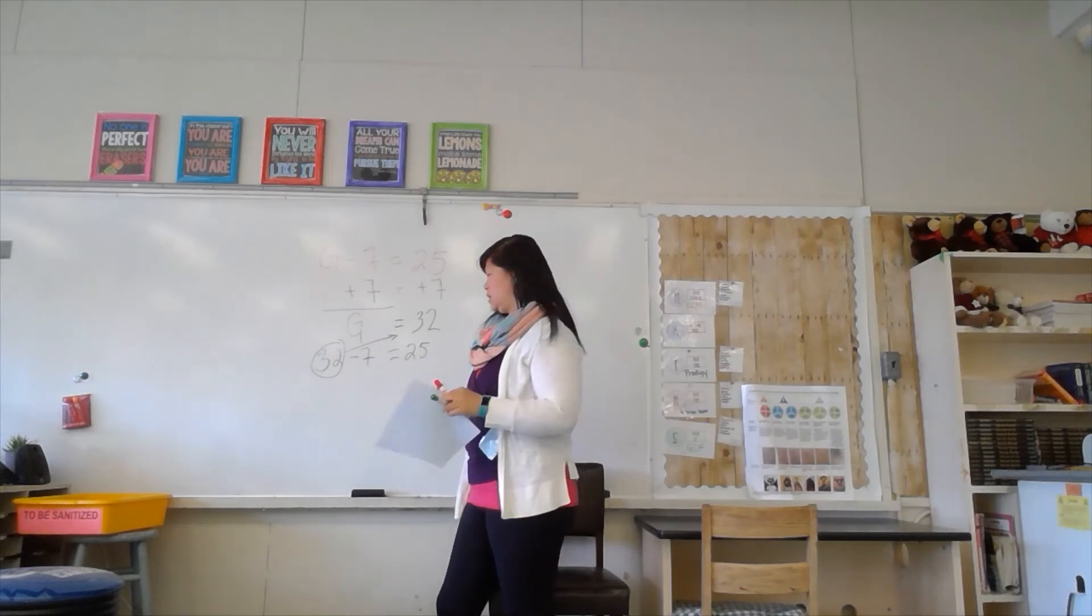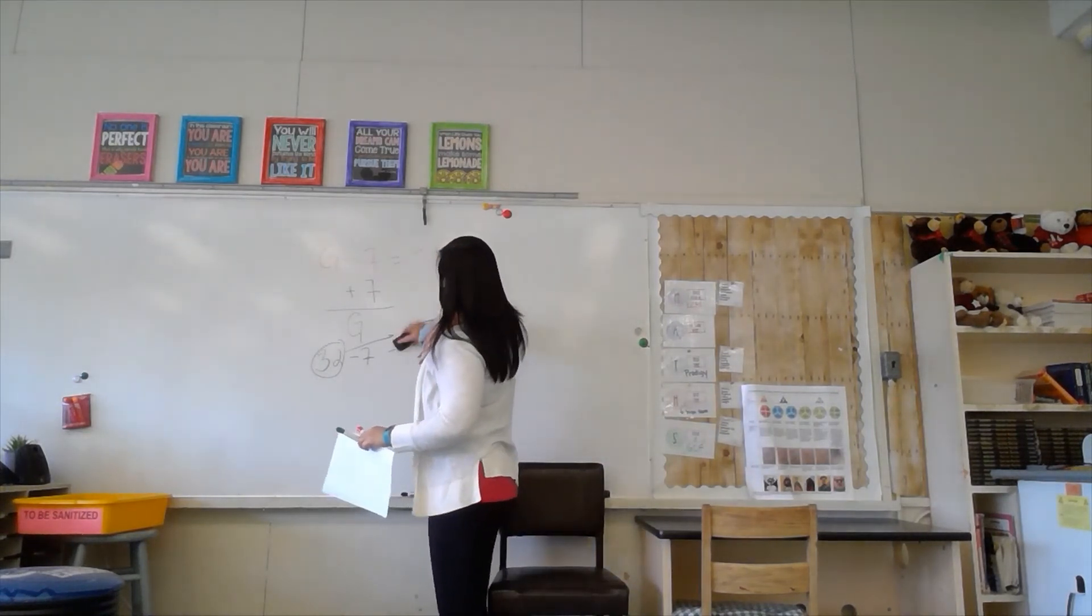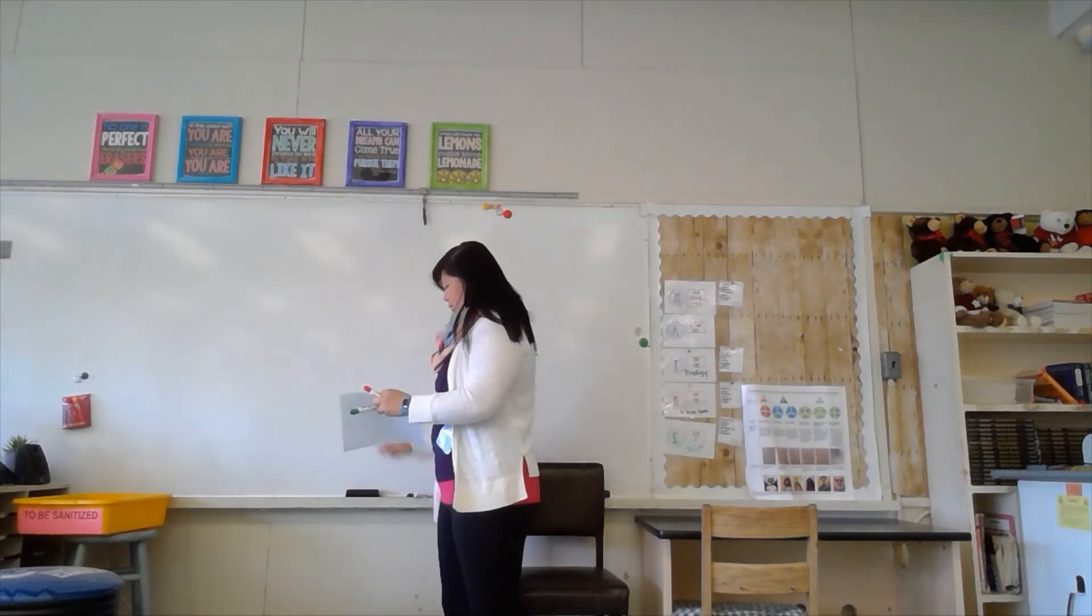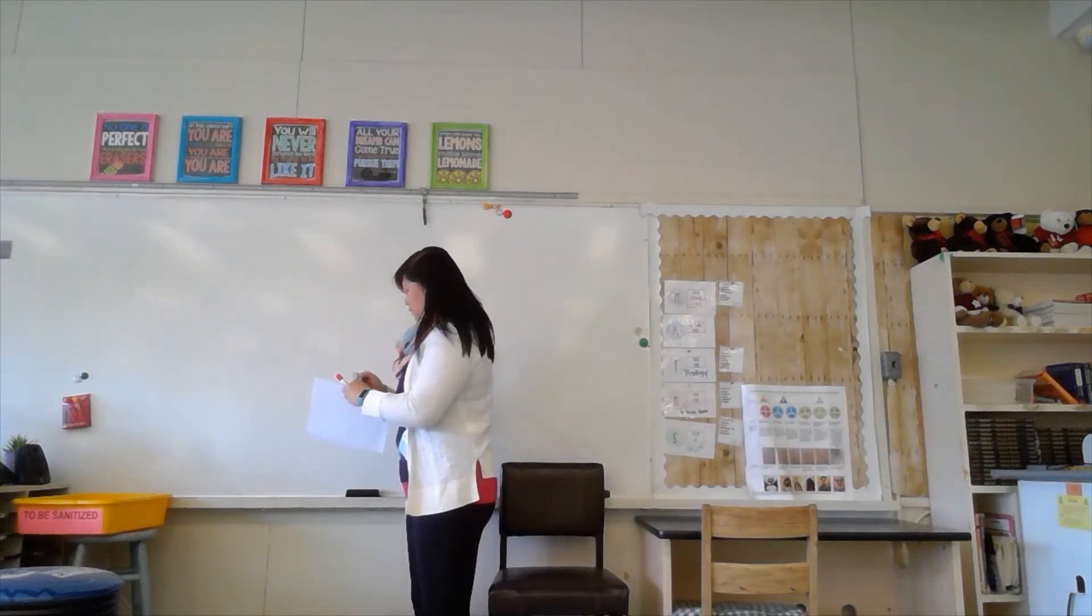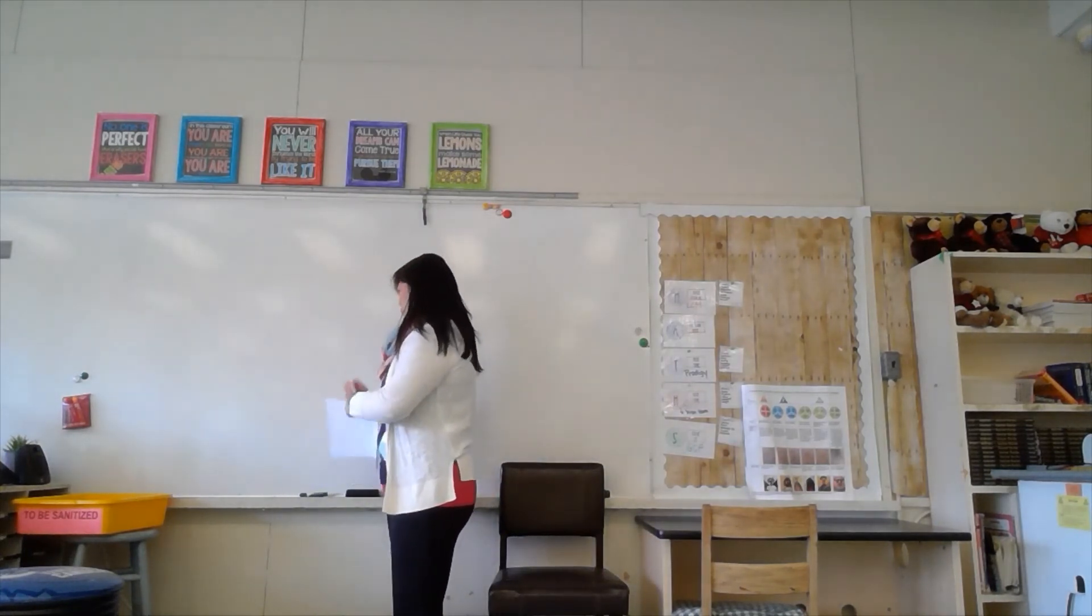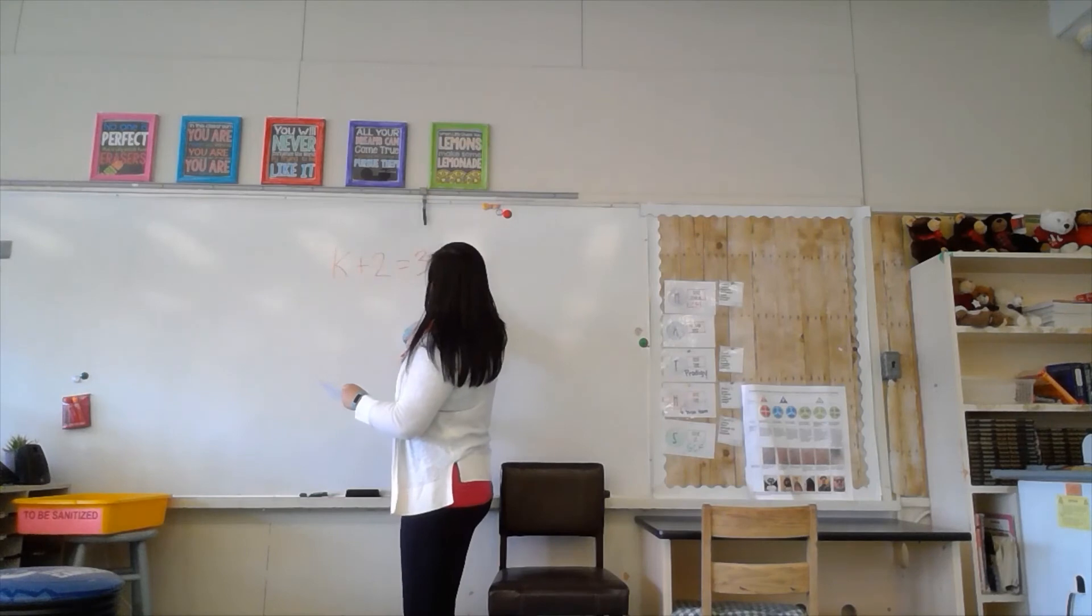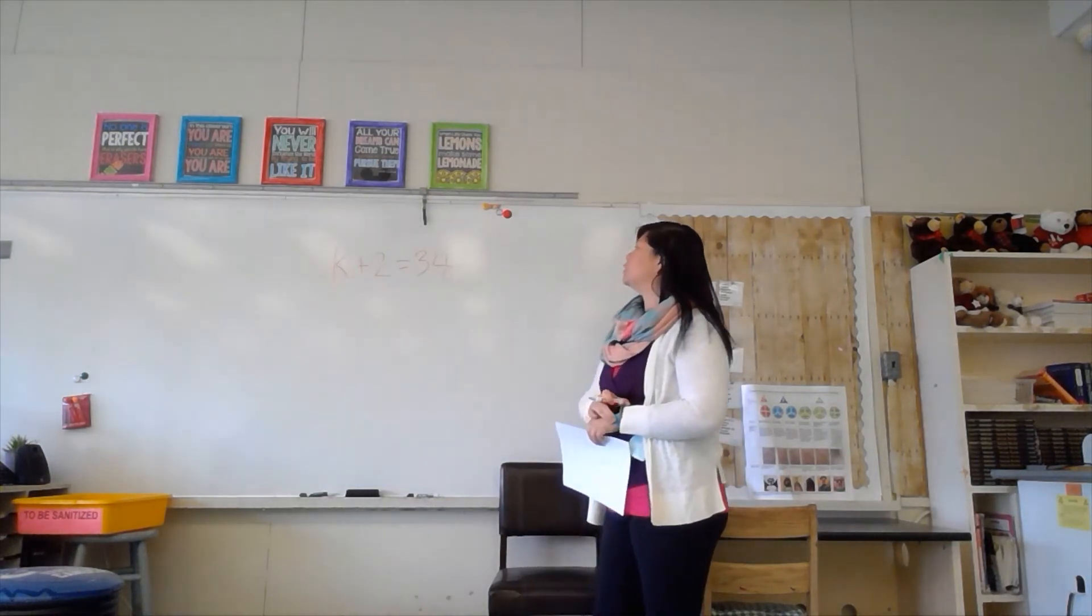Do you want to do one more or are you good? I'll do one more. One more? Let's do one more. No more. What is it? What is it? Five more. Five thousand plus that equals two thousand thirty. k plus 2 equals 34. So what are your steps?